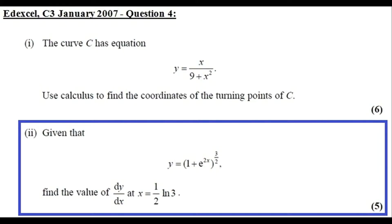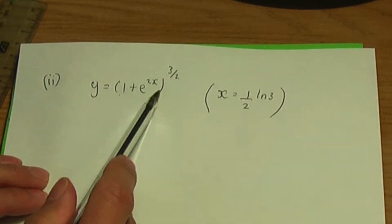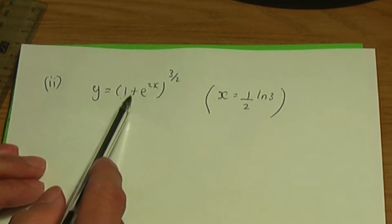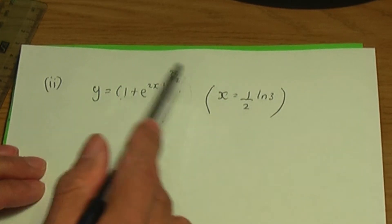Now part 2 of the problem. We're given that y equals (1 plus e to the 2x) to the power of 3 over 2, and we need to find the value of dy over dx at x equals half ln 3. In order to differentiate such a term, we need to use the chain rule. If you're unaware of the chain rule, I'll provide a link to a video I've created on it with additional examples in the description below.